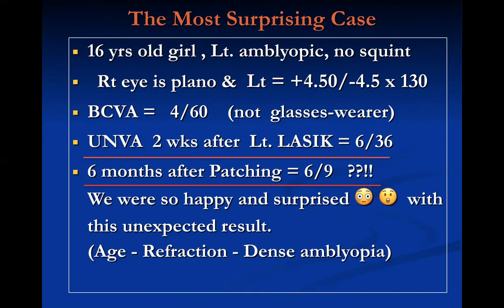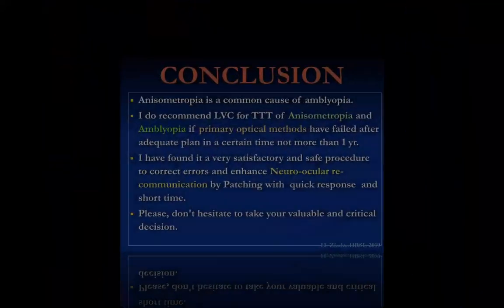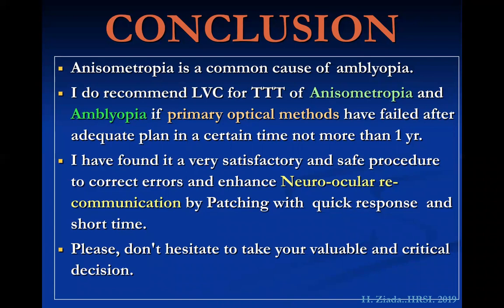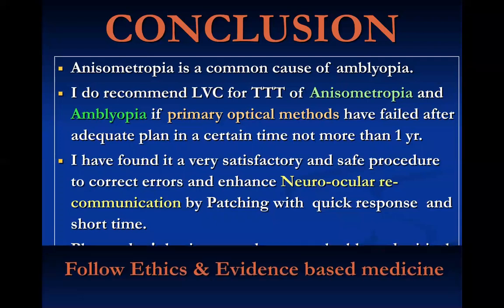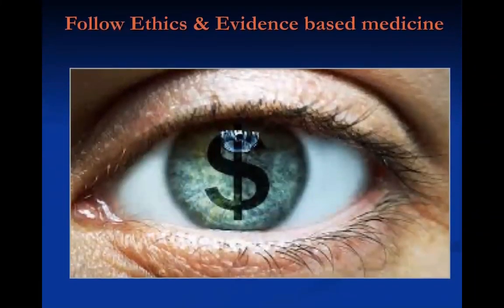In conclusion, anisometropia is a common cause of amblyopia. I recommend laser vision correction for treatment of anisometropia and amblyopia when primary optical methods have failed after an adequate trial — but the time should not exceed one year. I have found it a very satisfactory and safe procedure to correct refractive errors and enhance neuro-ocular re-communication through patching with quick response in a short time. Please do not hesitate to take the critical decision at the suitable time to save these children's eyes. But always follow ethics and evidence-based medicine.